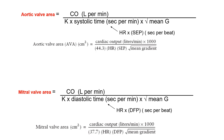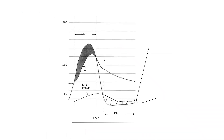You can look at one minute of recording and measure how much time is spent in systole, which might be 25 seconds, or you can extrapolate from a single beat. The total systolic time per minute can be taken as the systolic ejection period per beat — what we call SEP — multiplied by the heart rate.